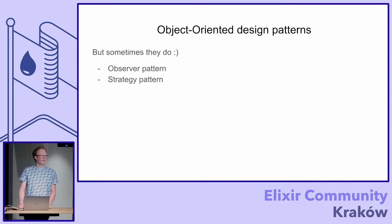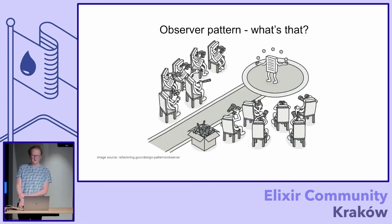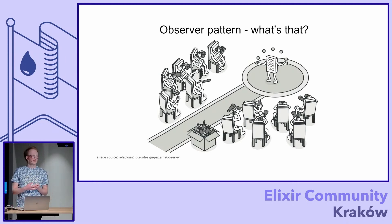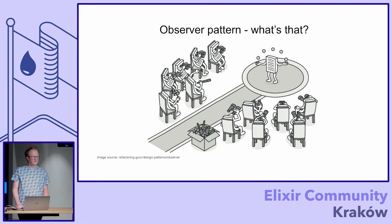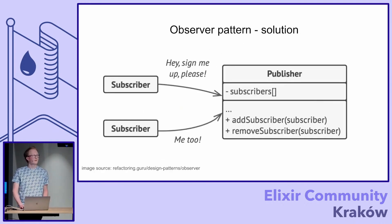Most notably those two: the observer pattern and the strategy one. Let's look at how we can do that. The observer pattern is about having some object whose state is changing, and other objects react to those changes. Instead of manually managing all these states, we can have a simple solution that will allow other objects to subscribe to those changes.